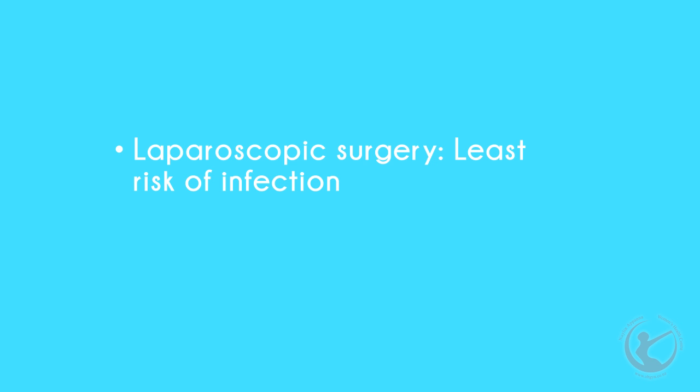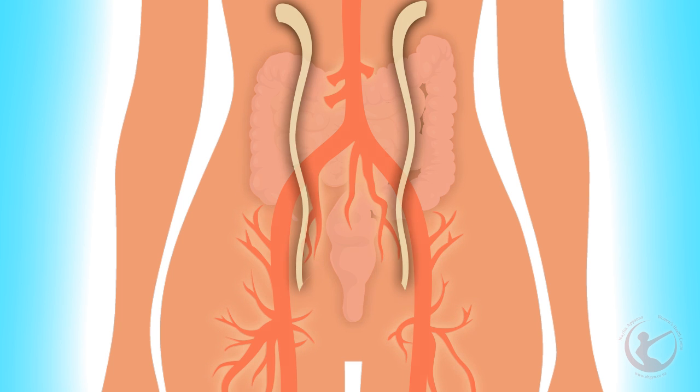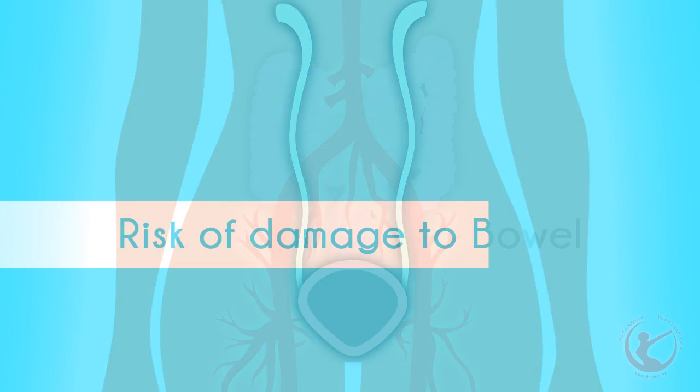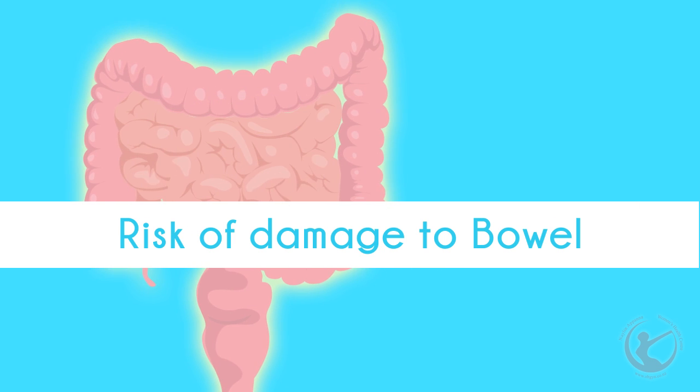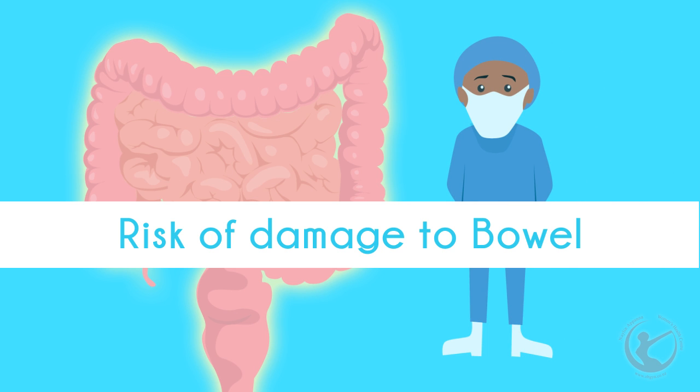Laparoscopic surgery is regarded as the cleanest of all procedures. The risks of this procedure are minimal, but any organ in the abdomen can be damaged during surgery. The organs most at risk of damage are bowel, blood vessels, the ureter and the bladder. If there is significant risk of damage to your bowel, I will arrange for you to have bowel preparation prior to your surgery and arrange for a bowel surgeon to be on standby to help with your procedure. I will discuss each risk in more detail.